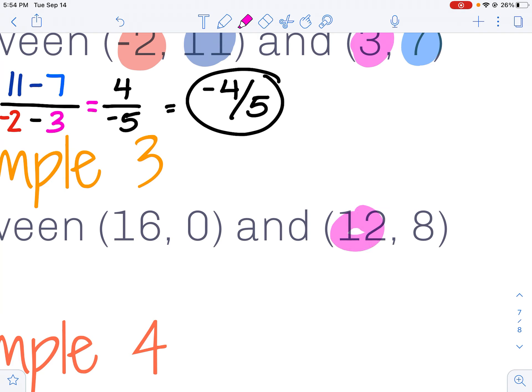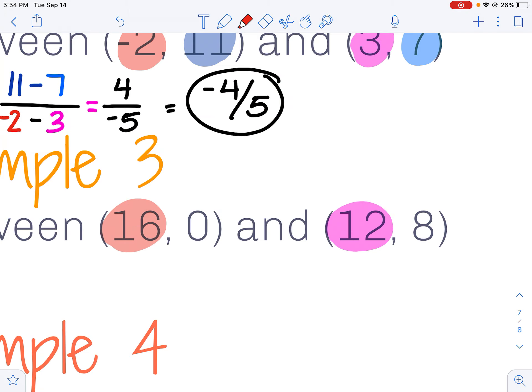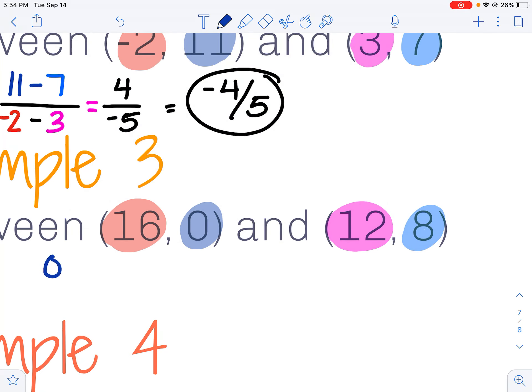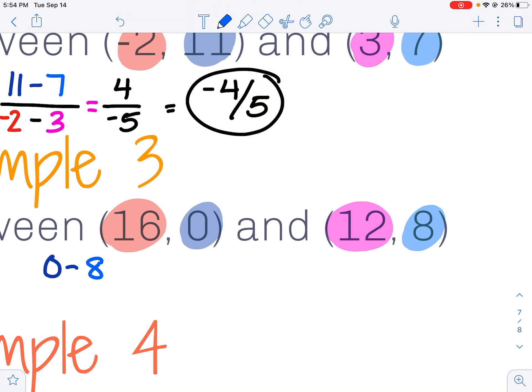Looking at the second example, again I'm just going to color code super quick here. I'm taking my first y value, 0, from that I'm subtracting my second y value, 8.